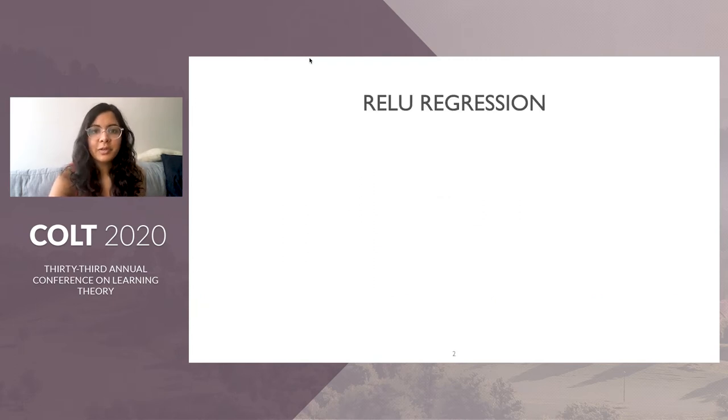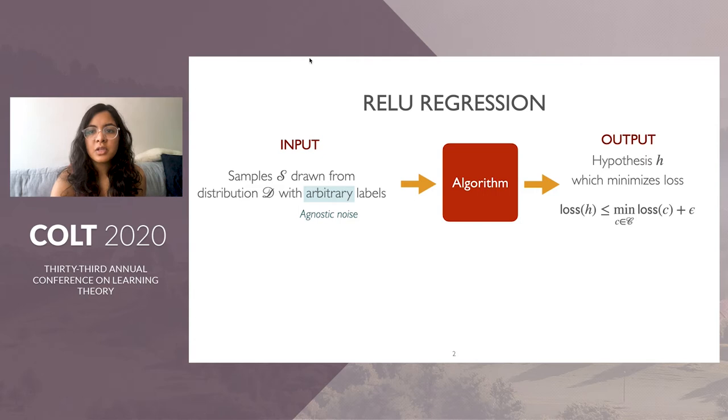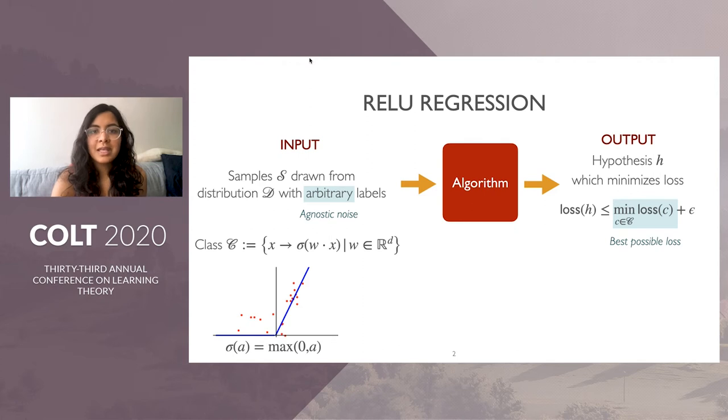Let's start with the definition of ReLU regression. We'll be given input samples S drawn from some underlying distribution D with arbitrary labels in the agnostic noise model. We want to design an algorithm that outputs a hypothesis H which minimizes some notion of loss, competitive with the best possible loss in the concept class C of ReLUs up to error epsilon.